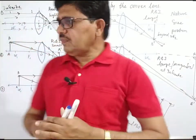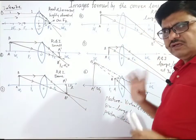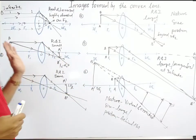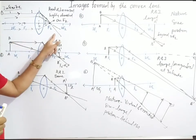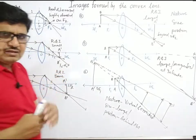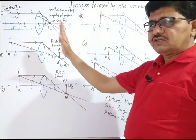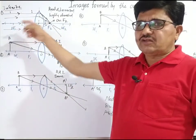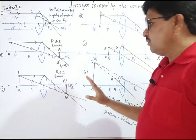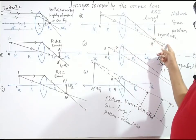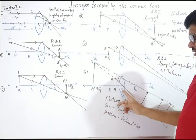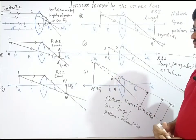Summary of convex lens image positions: First, second, third, fourth, fifth, and sixth — each time the object is placed at the left side of the lens. Object at infinite distance: image at focus, real and inverted. Object just beyond 2F: image real and inverted, between F2 and 2F2. Object on 2F1: image on 2F2. Object between F1 and 2F1: image just beyond 2F. Object on F1: image at infinite distance. Object between optical center and focus: image produced just behind the object.